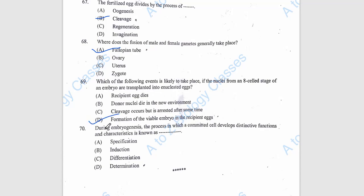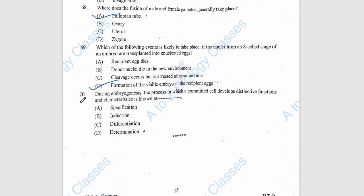The last question, 70: During embryogenesis, the process in which a committed cell develops distinctive functions and characteristics is known as differentiation, option C.